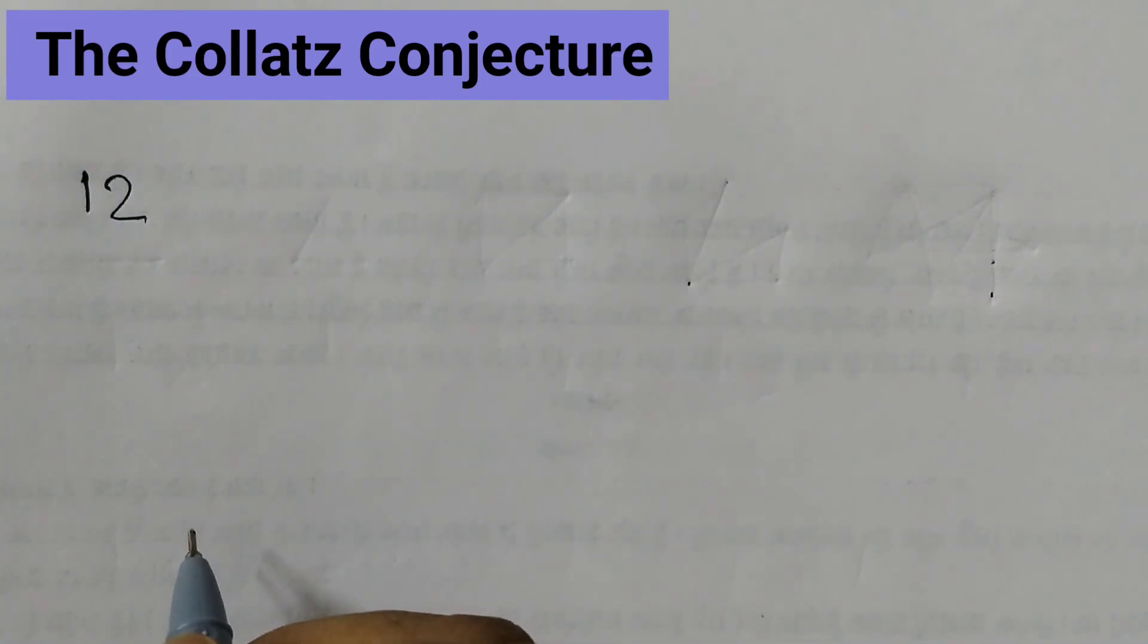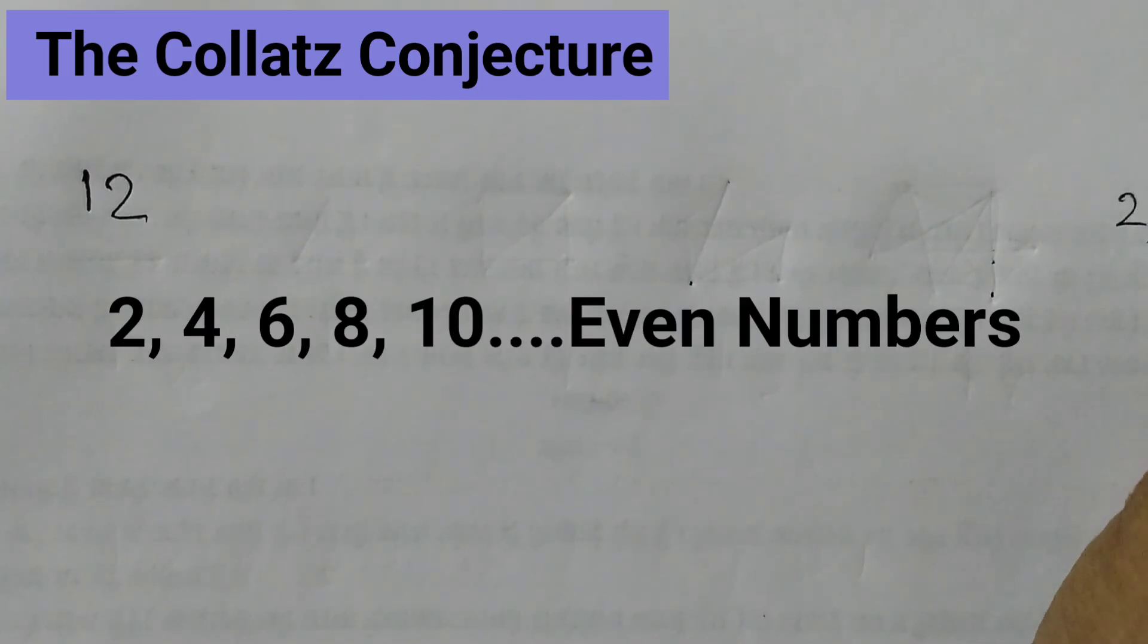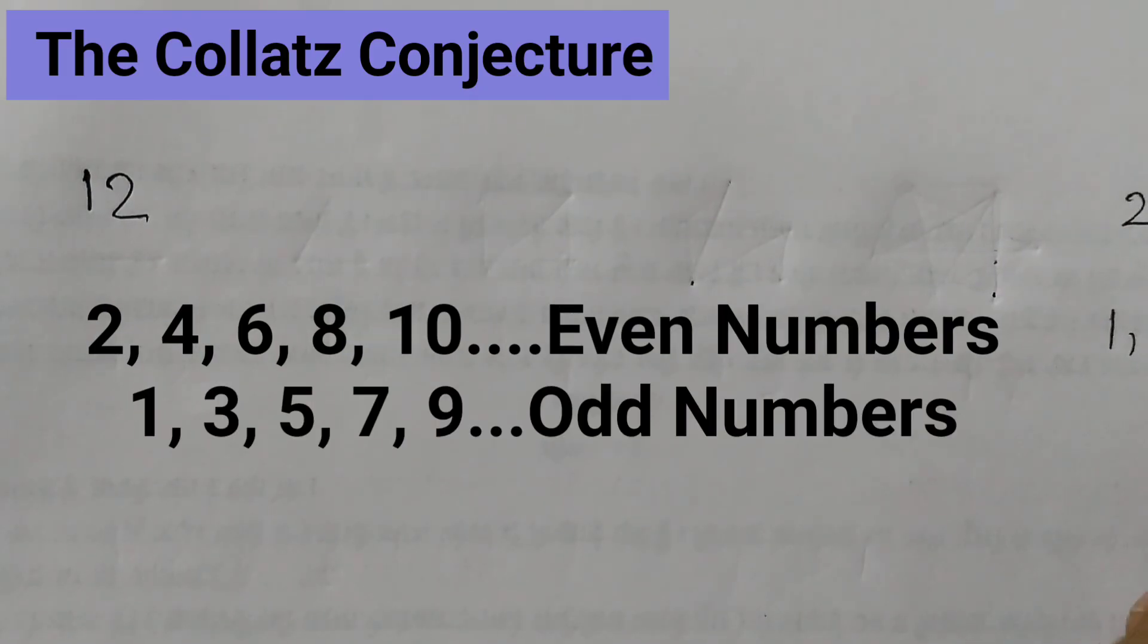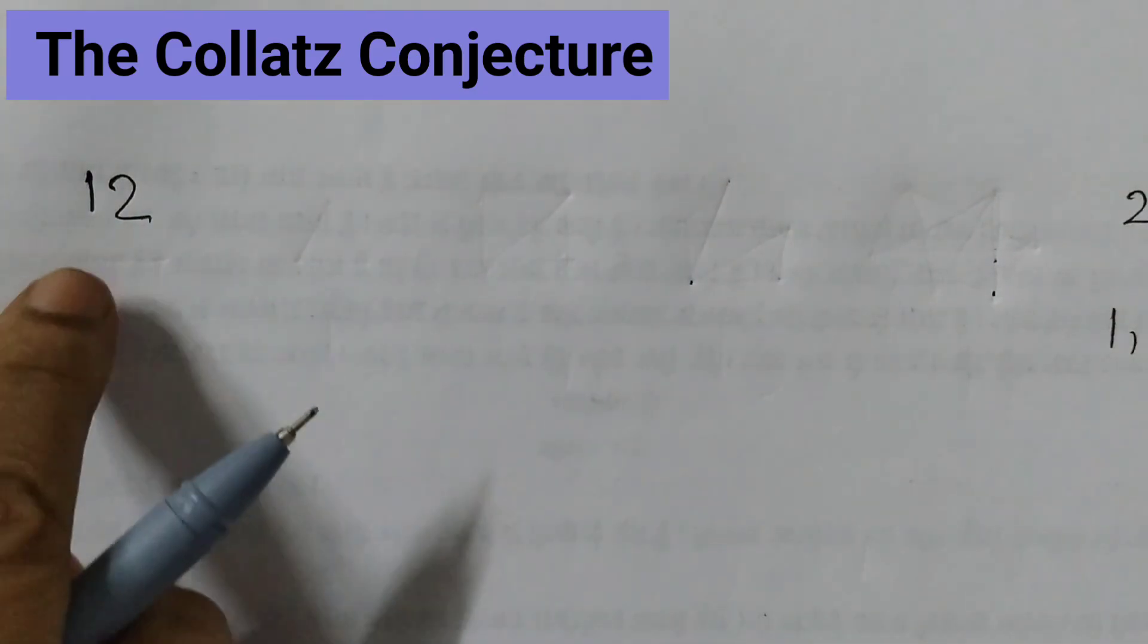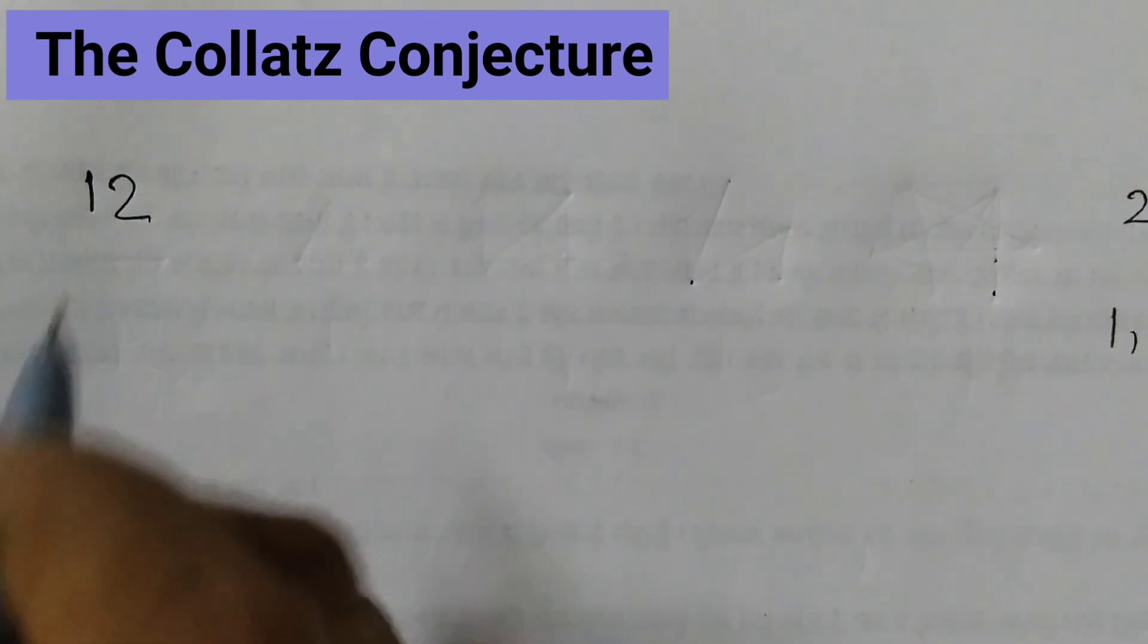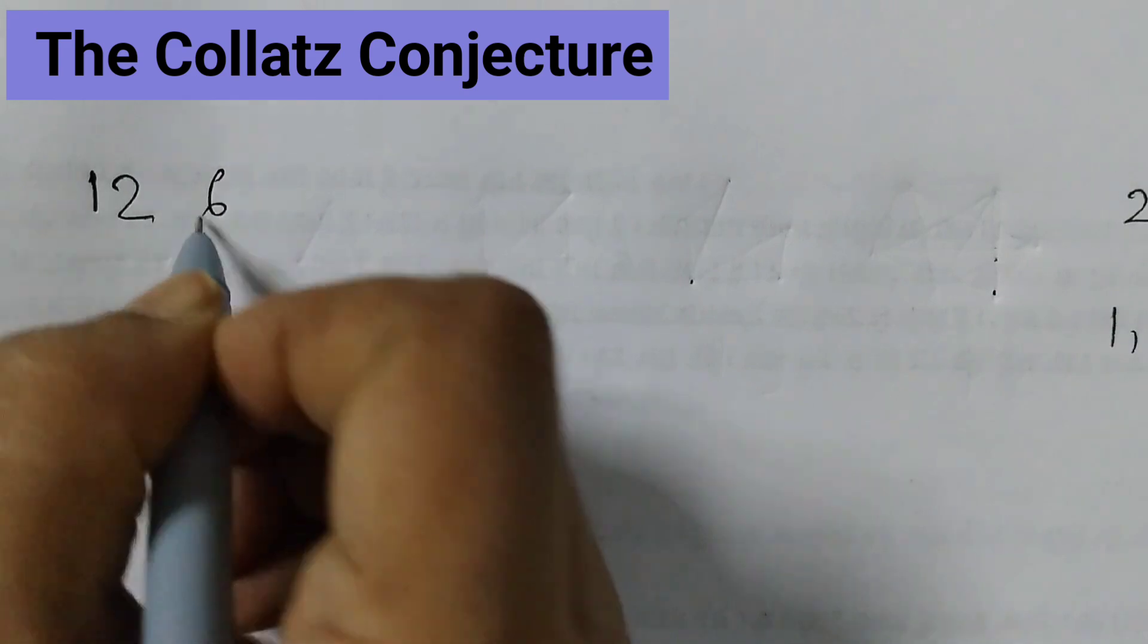12 is an even number. First you should know what is an even number and odd number. Even numbers are like 2, 4, 6, 8, 10, the numbers which are divisible by 2 and odd numbers are 1, 3, 5, 7, 9. So here 12 is an even number, so we have to take half of this. Half of 12 is 6.